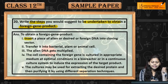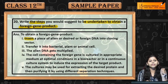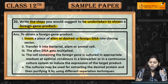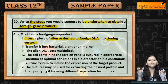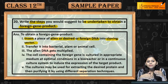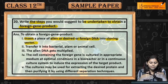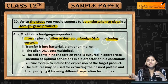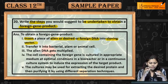We need to insert a selective alien, desired, or foreign DNA into the cloning vector. The cloning vector will take us to the cell, where it will multiply and we will get a product. We have inserted the cloning vector into our desired gene.